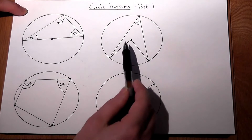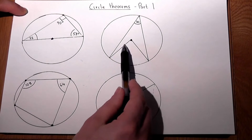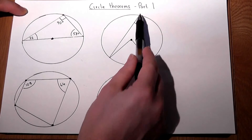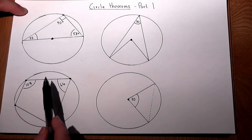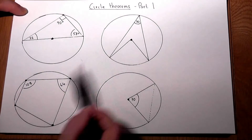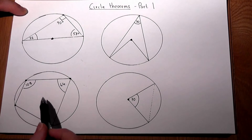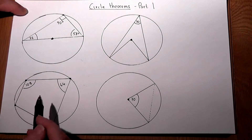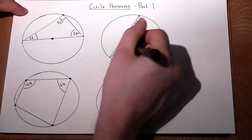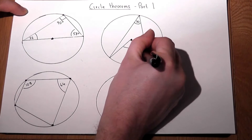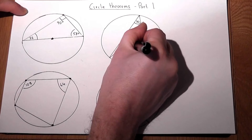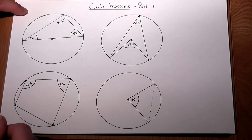Suppose you've got an angle at the center and one at the circumference — then the angle at the center is always double the angle at the circumference. So this angle here is simply two lots of 30, i.e. 60 degrees, and that fact will always hold.